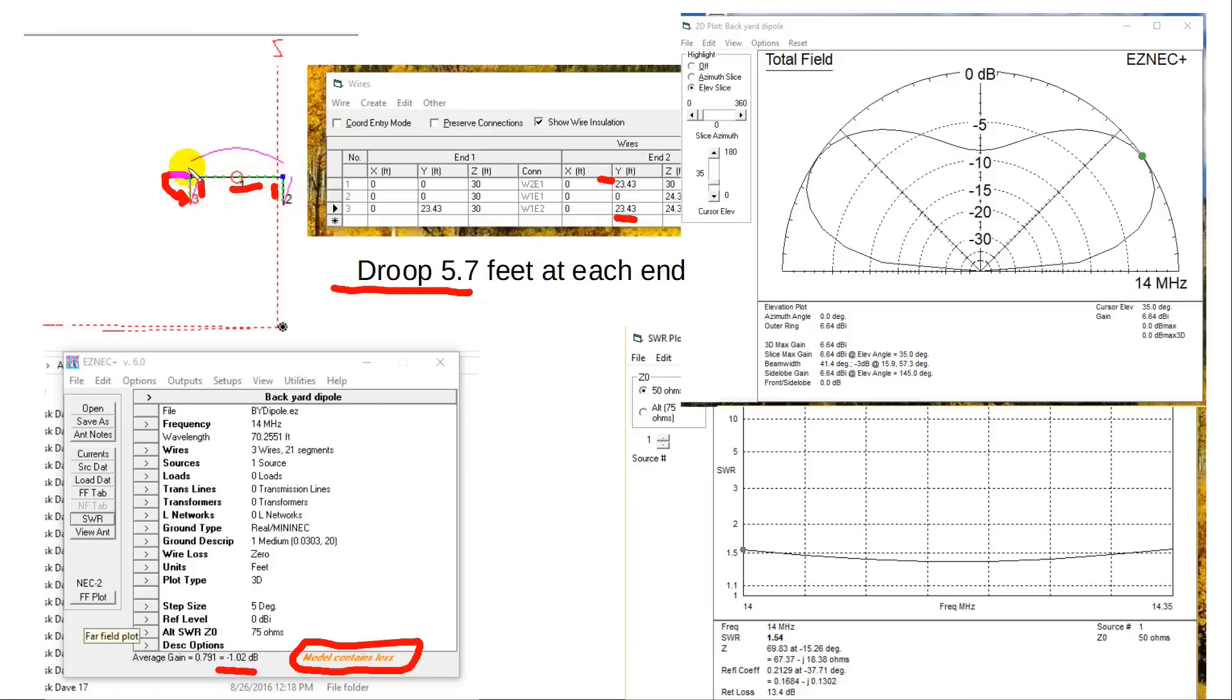They've got current in them right there. And there's the current in the main thing. And it is center-fed, just like an ordinary dipole. Yeah, very nice SWR over here. Good elevation pattern. I put in all these things for reference.